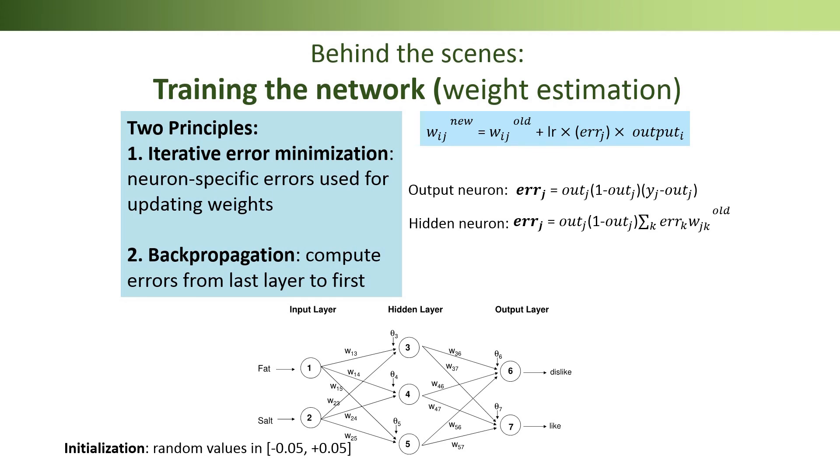The first principle is therefore iterative error minimization. Here's the general formula showing how weight W-I-J, leading to neuron J, is updated by adding a component that is a function of the error of neuron J, called error J.